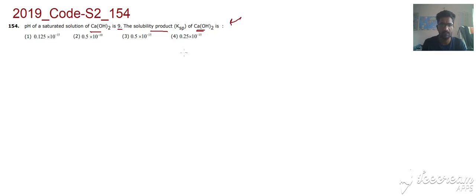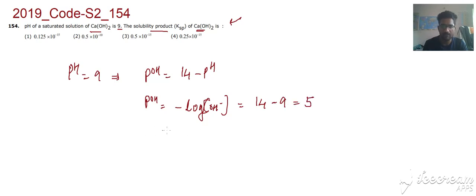We will see what is pH. pH is 9, so that means pOH is equal to 14 minus pH. pOH is equal to minus log of OH minus ions, which is 14 minus pH, 14 minus 9, that is equal to 5.